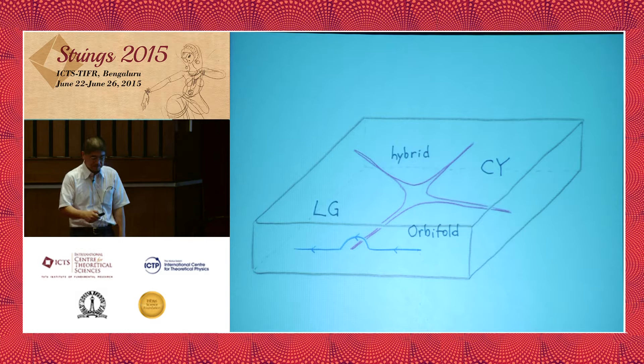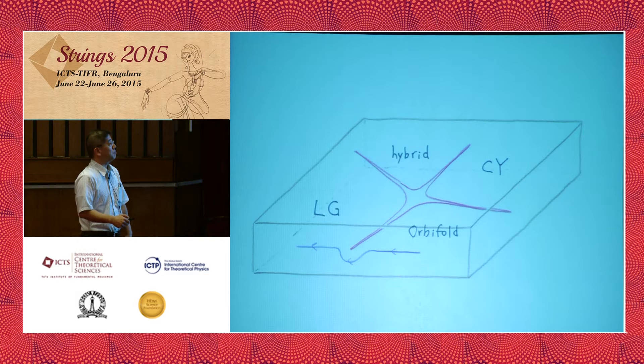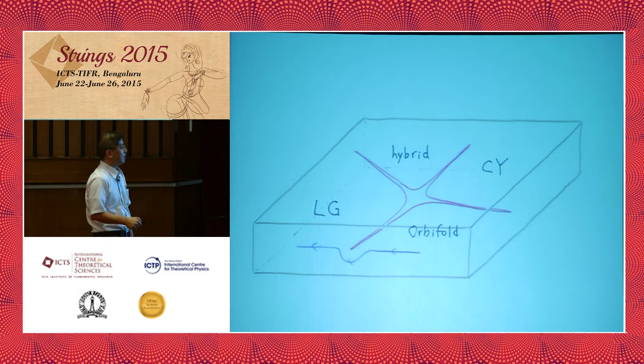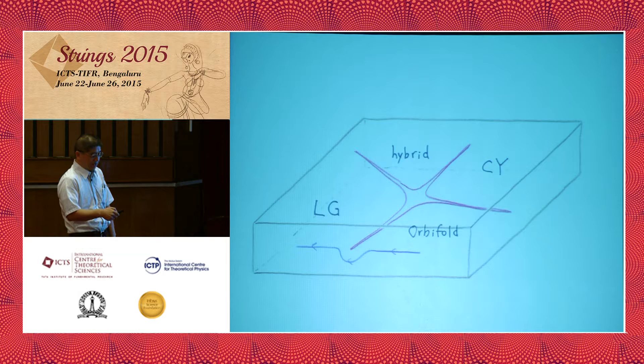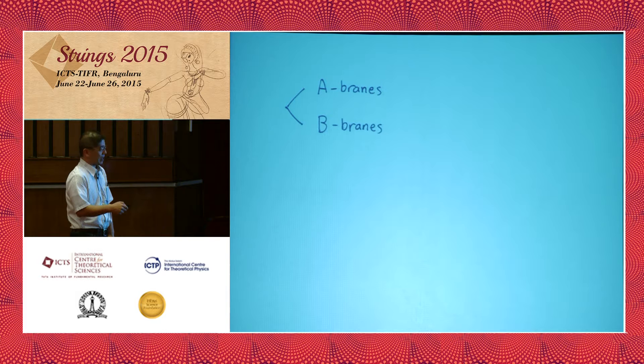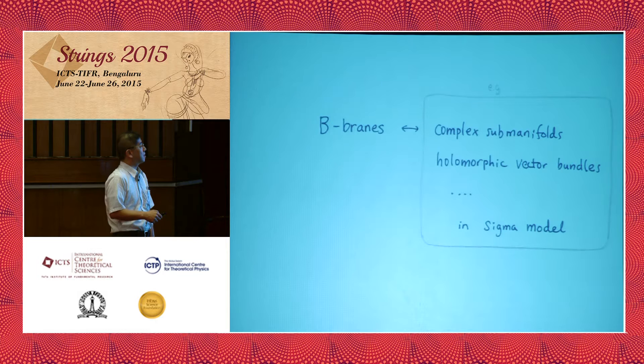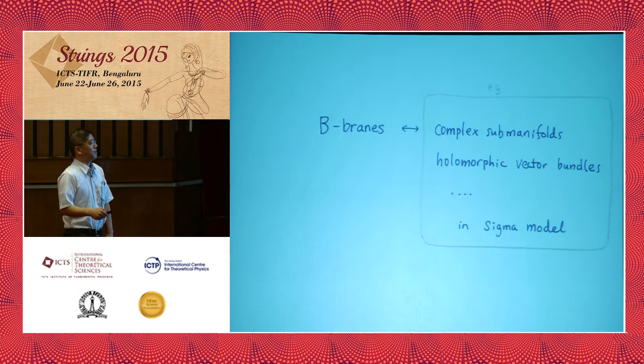We are interested in branes in this class of theories — in particular, the low energy behavior of branes at each phase, and how they are transported into each other along some path that avoids the discriminant locus. There are two kinds of branes: supersymmetric boundary conditions called A-branes and B-branes. Today I will focus on B-branes. In the case of a nonlinear sigma model, these correspond to complex submanifolds of the target space, or holomorphic vector bundles supported on these complex submanifolds.